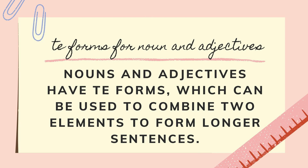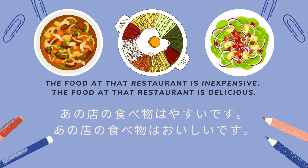Te-form for nouns and adjectives. Nouns and adjectives have Te-forms which can be used to combine two elements to form longer sentences. How do we use the Te-form to connect two sentences? Our example here is this one.